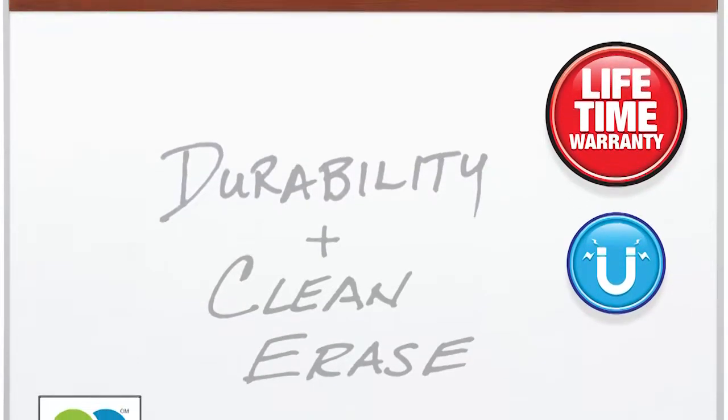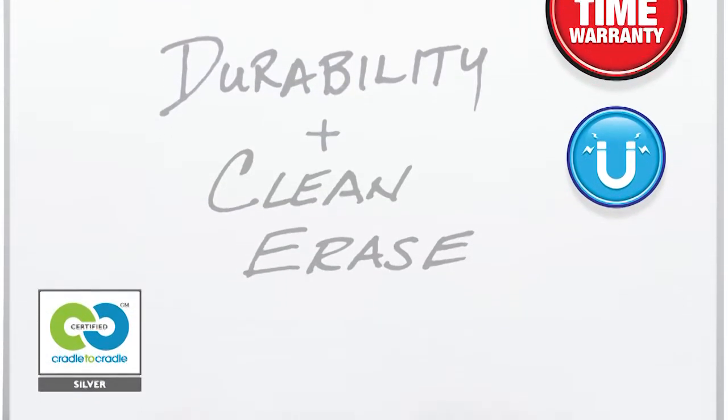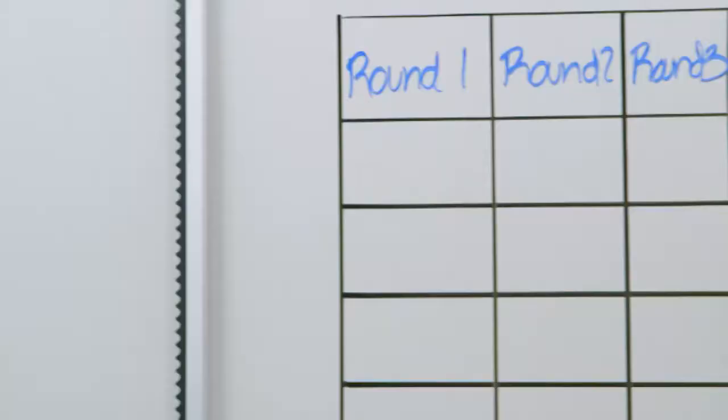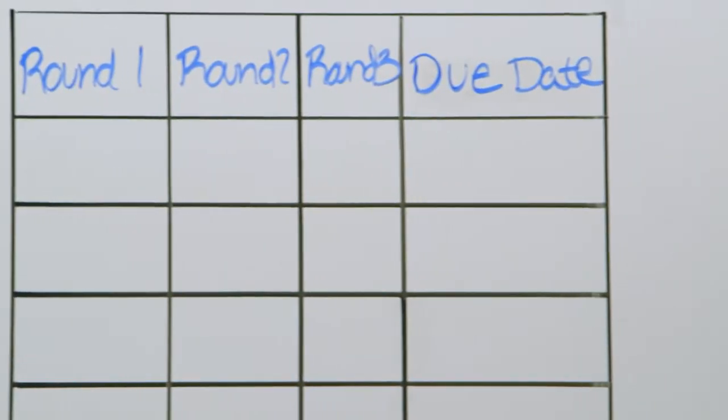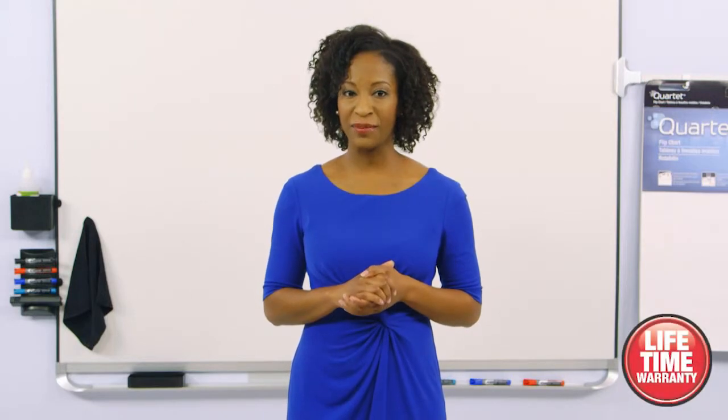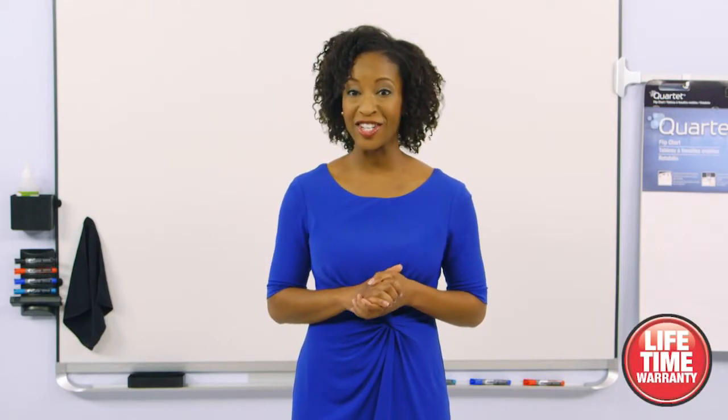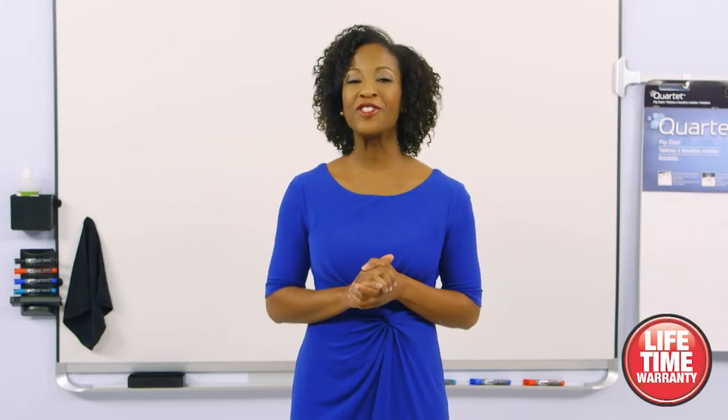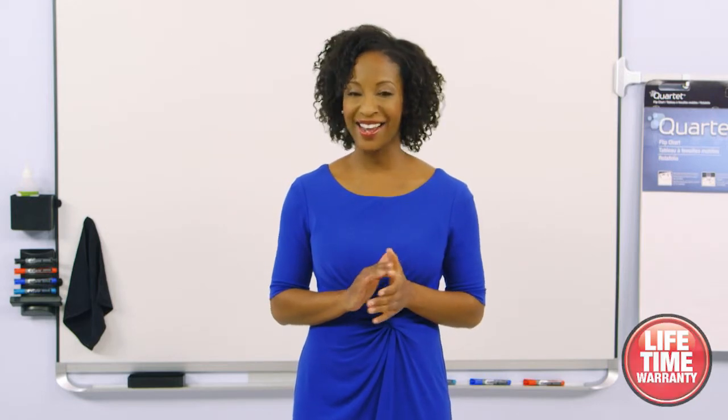Finally, the rhino of all whiteboards is the Quartet Duramax porcelain whiteboard surface, our highest quality board. The fused enamel and heavy gauge steel surface is backed by a solid substrate. These are the real deal and they come with a lifetime warranty. You cannot dent, scratch, stain or ghost the Superman of boards. You cannot go wrong with these.